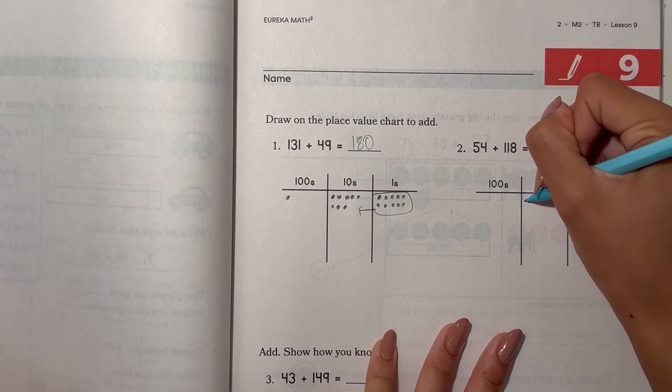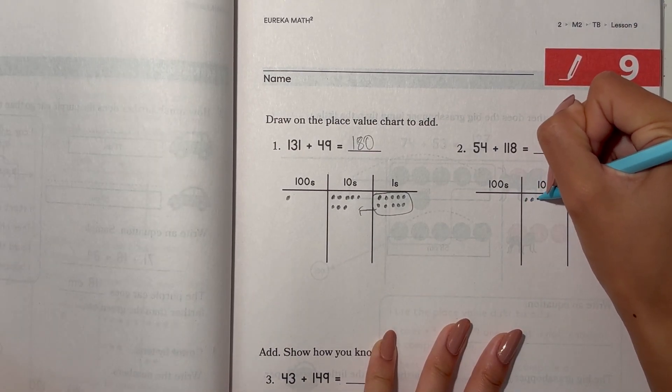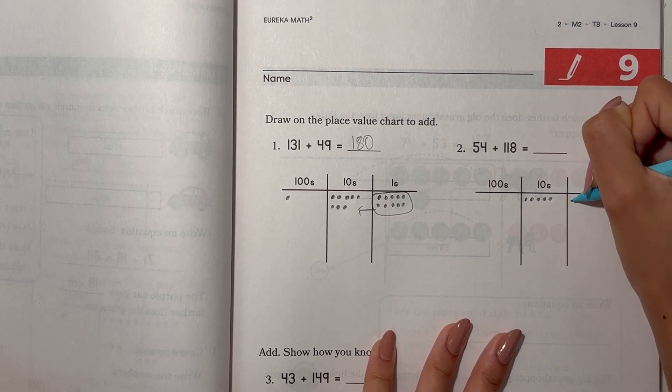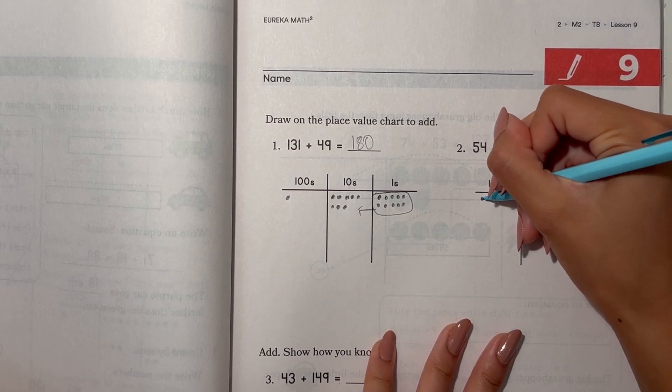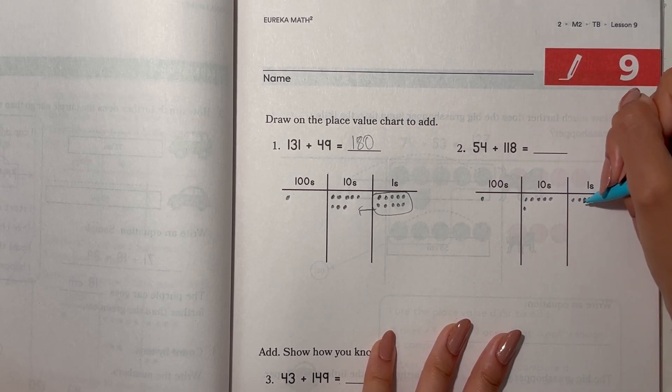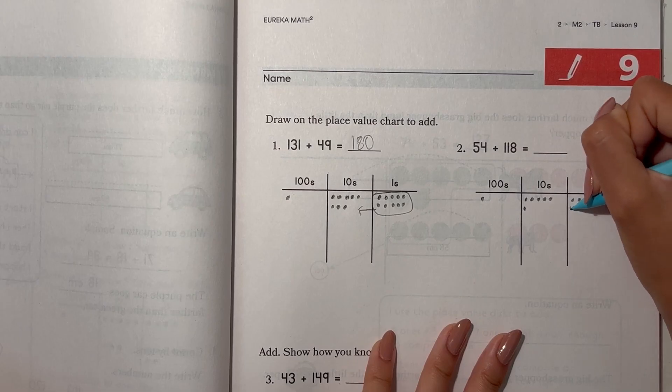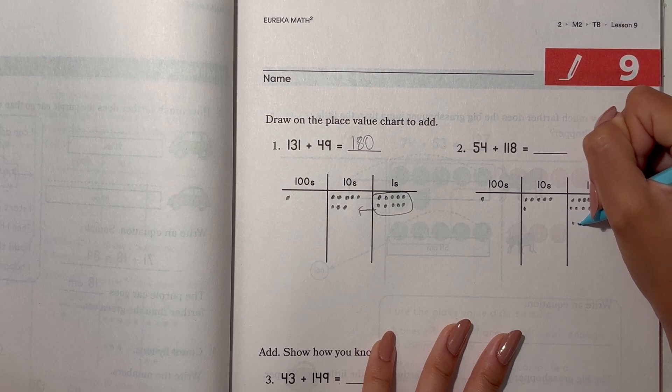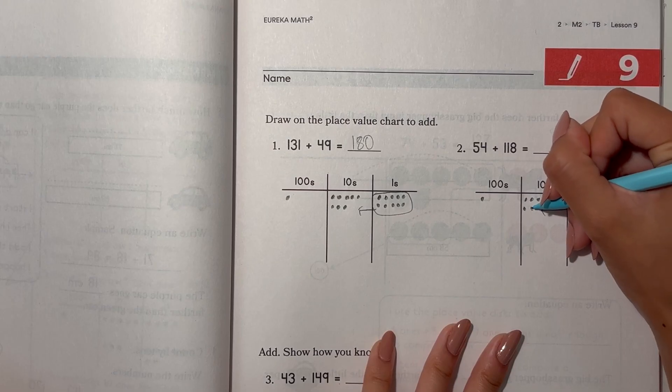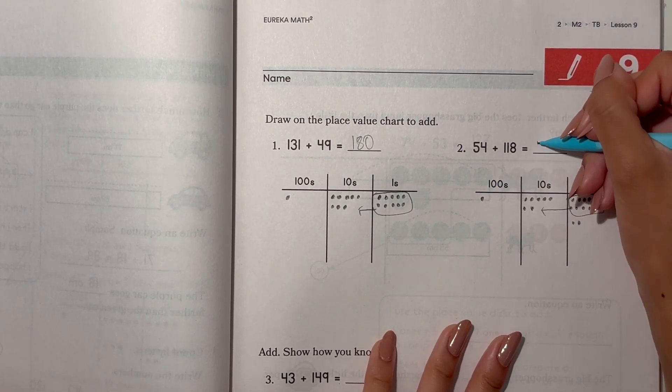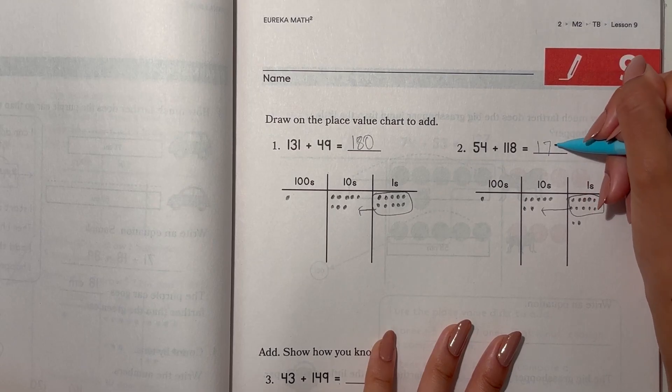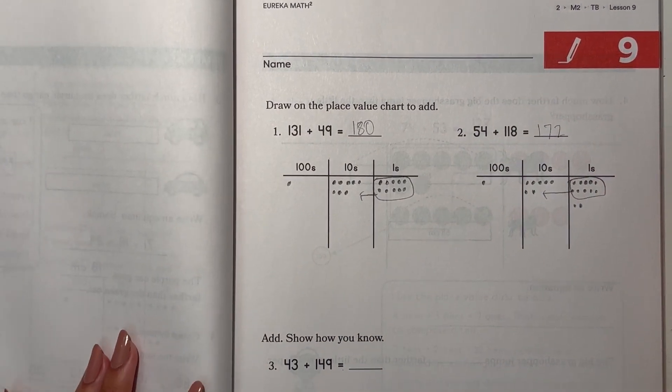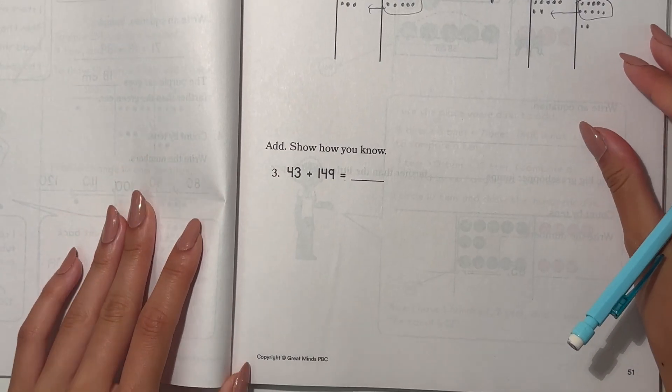Number 2. We have 54 plus 118. So this is a group of 10 ones. Goes to tens place. So now we have 100, 7 tens, 2 ones, 172. So now add, show how you know.